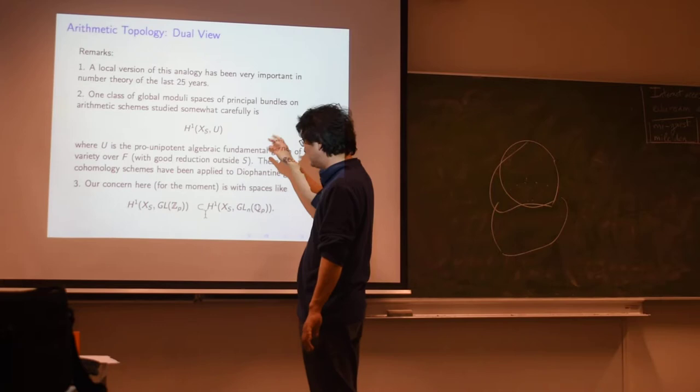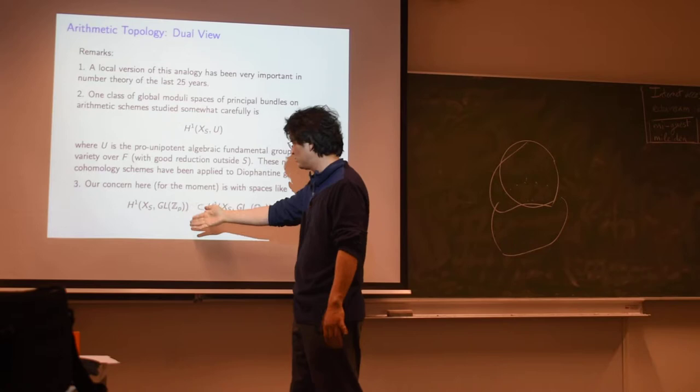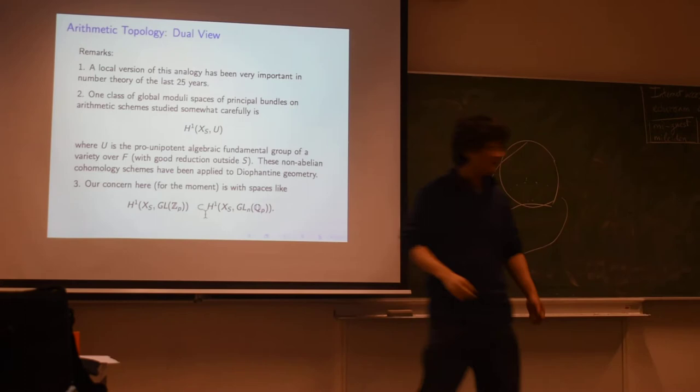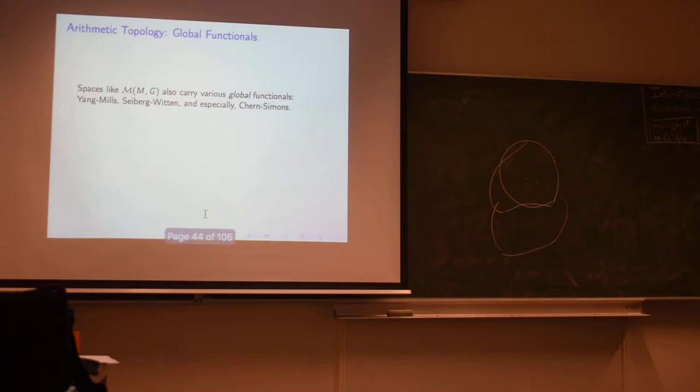But for the moment, for today, so all of these are somehow similar and probably should be studied at least once. We're going to study mostly, discuss mostly this kind of moduli space. So this is H¹ with constant coefficients here. This is actually a varying coefficient. This is the constant coefficient. So that's just the moduli space of representations.